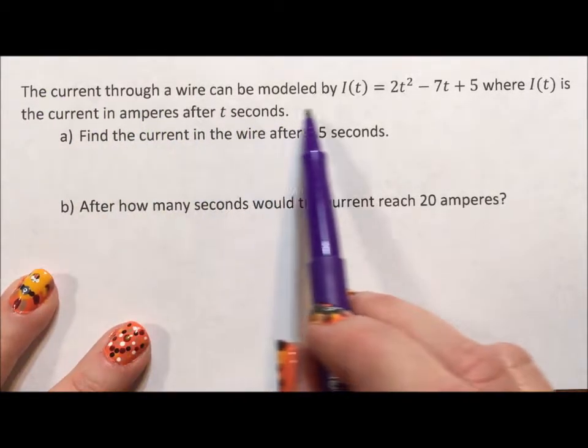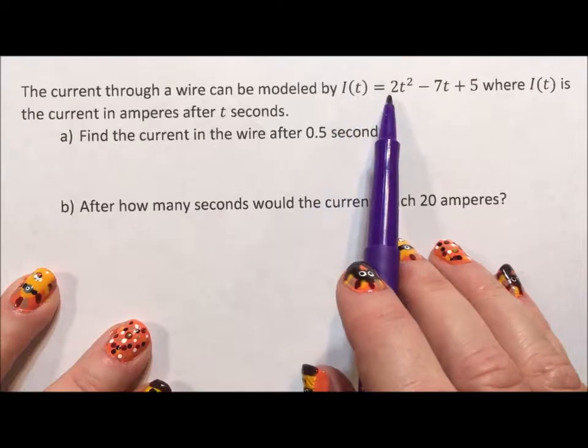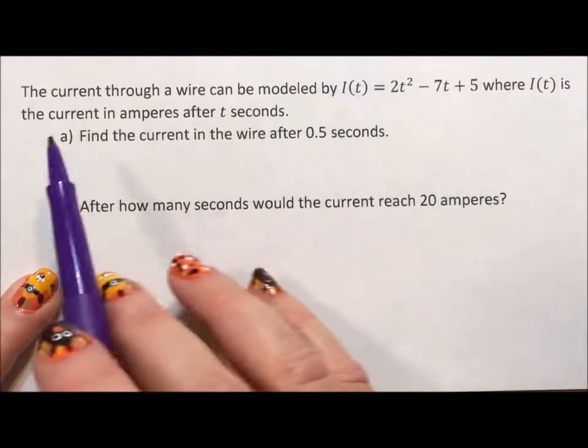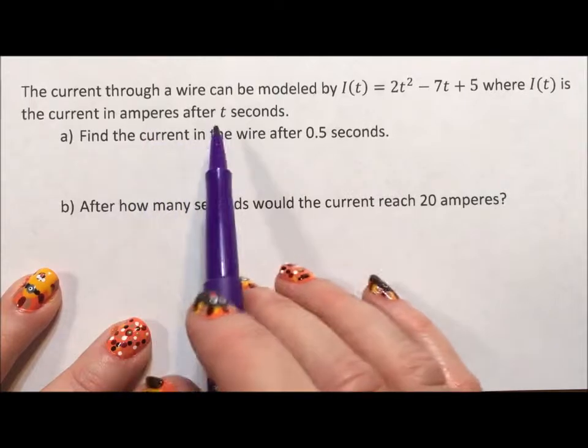So the current through a wire can be modeled by I(t) equals 2t squared minus 7t plus 5, where I(t) is the current in amperes after t seconds.